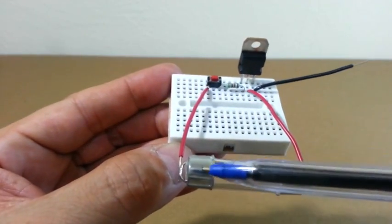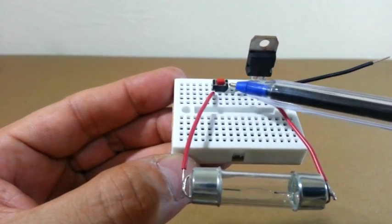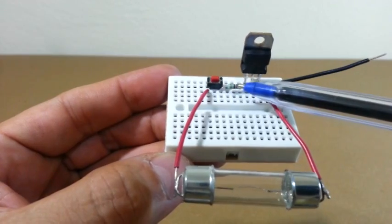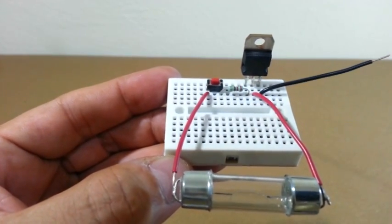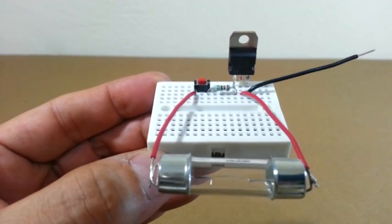Also, from the positive of the supply, we go here to the switch, from the switch to the resistor, 220 ohms. And the resistor is connected to the transistor's base.